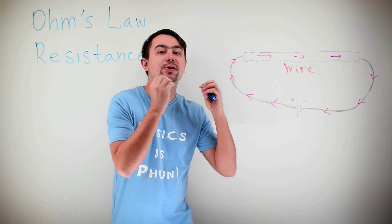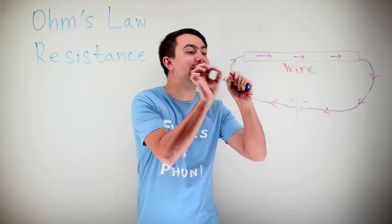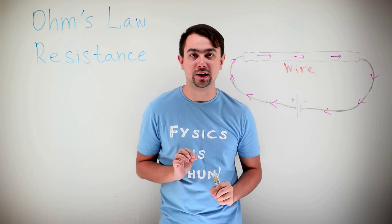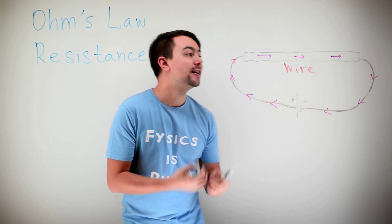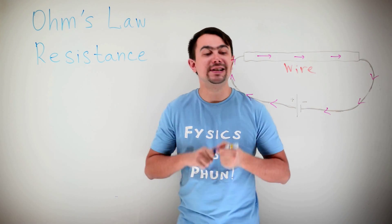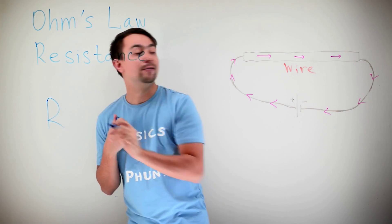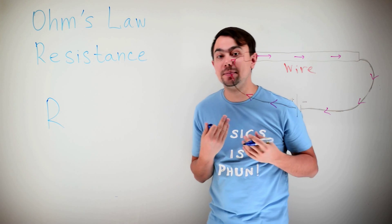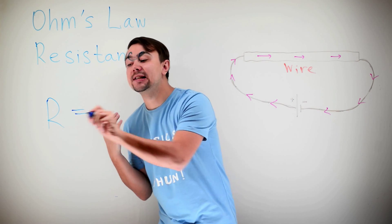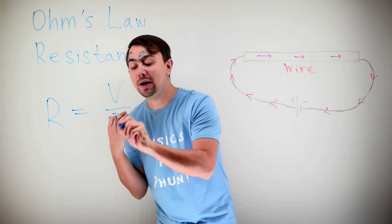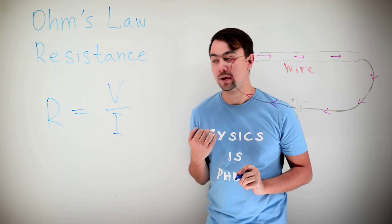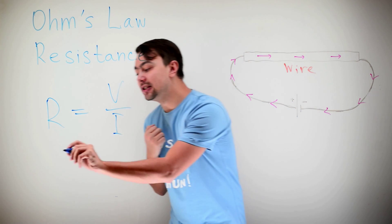The resistance is a measure of how hard it is for the electrons to go through the wire. The bigger the resistance, the harder it is. Resistance is defined for one wire or element, it could be a lamp, as voltage divided by the current.